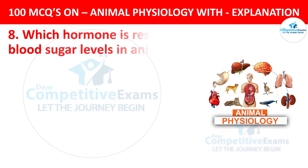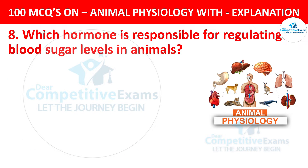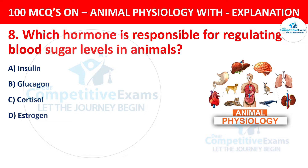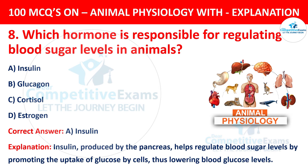Question number 8. Which hormone is responsible for regulating blood sugar levels in animals? The options are insulin, glucagon, cortisol, or estrogen. The correct answer is A, insulin. Insulin, produced by the pancreas, helps regulate blood sugar levels by promoting the uptake of glucose by cells, thus lowering blood glucose levels.